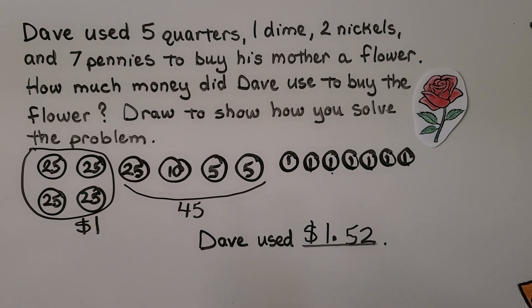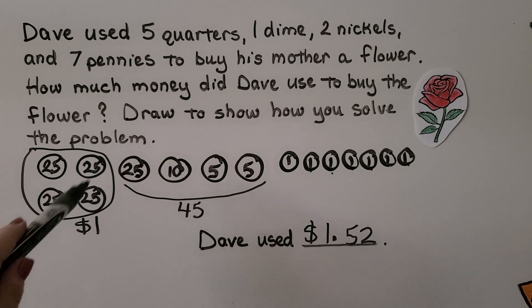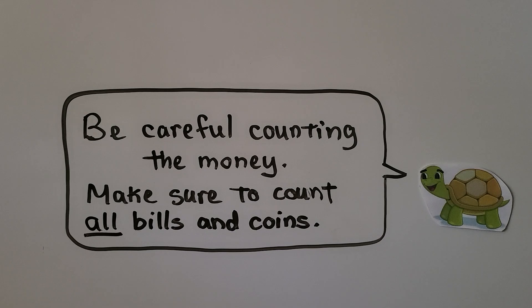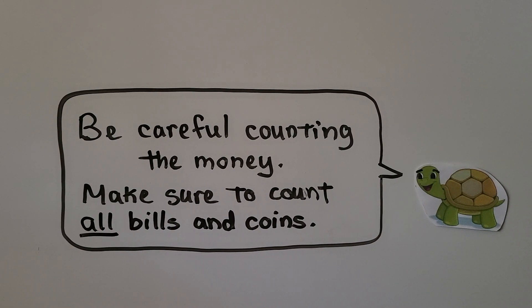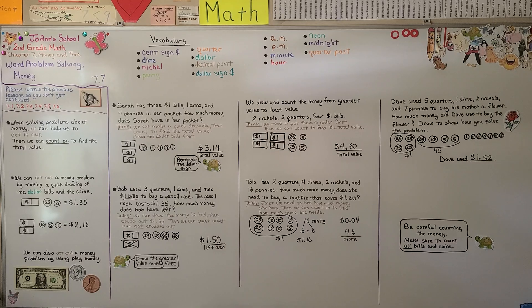We start by drawing the greater value coins and see if we can make a dollar, then count on. Be careful counting the money — make sure to count all the bills and coins; you don't want to forget any or you could end up with the wrong amount. Our next lesson, 7.8, is not about money — it's about telling time. We're going to learn about time to the hour and half hour. Hope you'll join me!